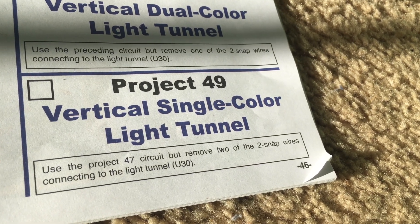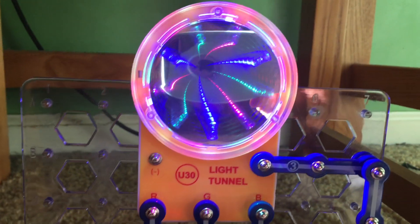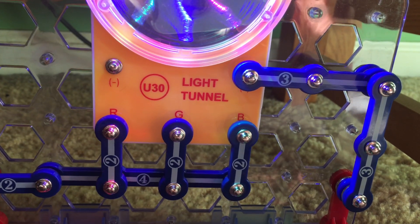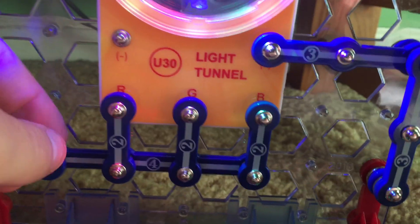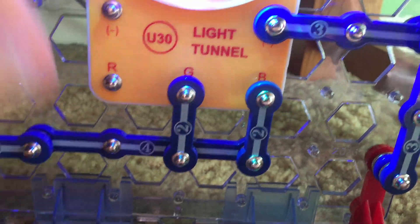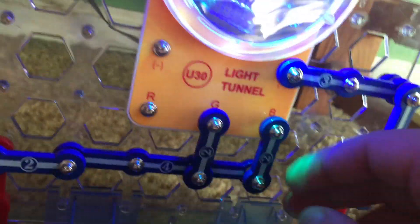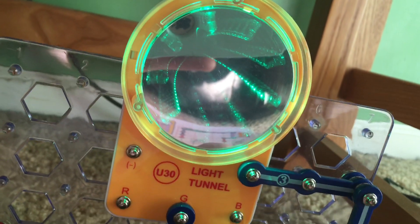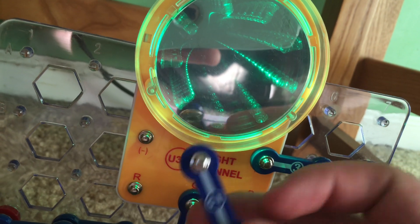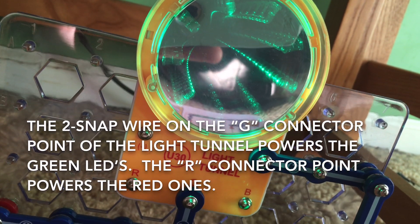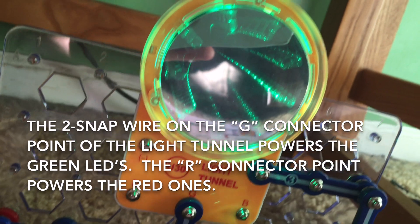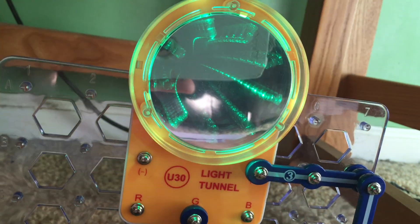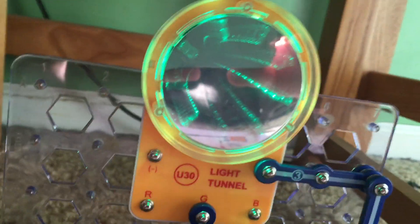Now, we're going to remove the two-snap wires that are connected to the light tunnel. I am going to remove the one on the left and the one on the right. Now, only the green LEDs are lit. The blue and red ones are off because the wires that I removed powered them. I chose to leave the green LEDs on because green is my favorite color. And so, it's an all-green light show.